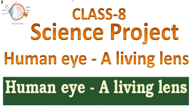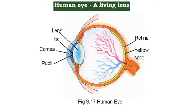Class 8 Science Project: the Human Eye Living Lens. This project is made to demonstrate the human eye. The first part is the diagram of the human eye, which is figure number 9.17, as given in the textbook.